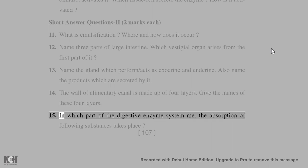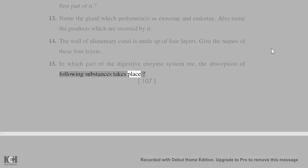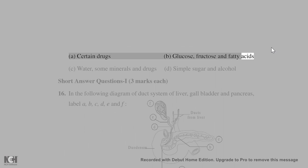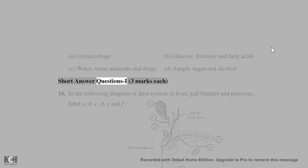15. In which part of the digestive system does absorption of the following substances take place? A. Certain drugs, B. Glucose, fructose, and fatty acids, C. Water, some minerals, and drugs, D. Simple sugars and alcohol.